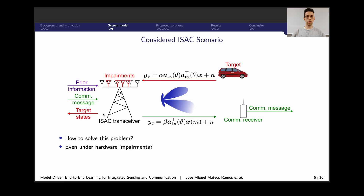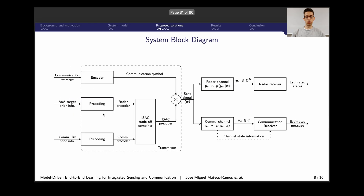Before going into the proposed solutions, here is a block diagram representing this same picture. On the left-hand side, we have the ISAC transceiver — considering only the transmitter part — which maps the communication message into a communication symbol, and the prior information about the target and receiver to an ISAC precoder. On the right-hand side, we represent both receivers: on the top row, the radar receiver co-located with the transmitter, and on the bottom row, the communication receiver after the communication channel.